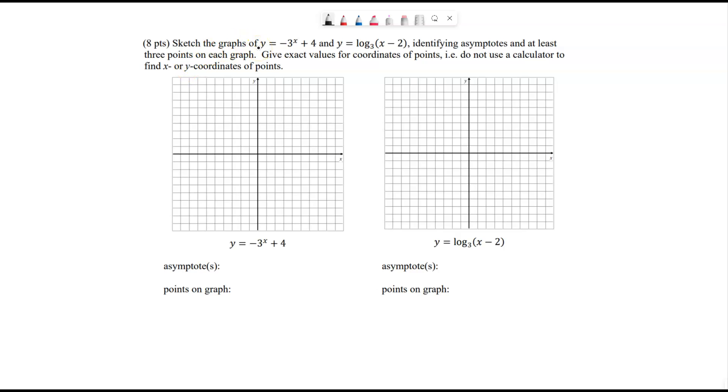Sketch the graphs of y equals negative 3 to the x plus 4 and y equals log base 3 of x minus 2, identifying asymptotes and at least three points on each graph. Give exact values for coordinates of points, i.e. do not use a calculator to find x or y coordinates of points.